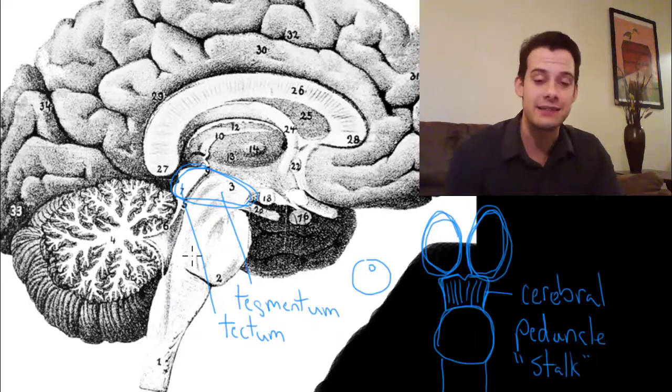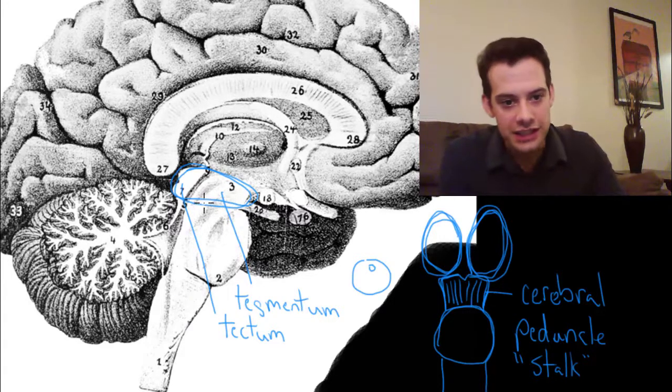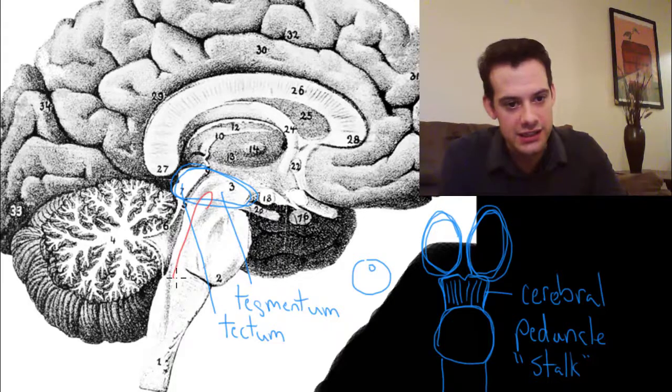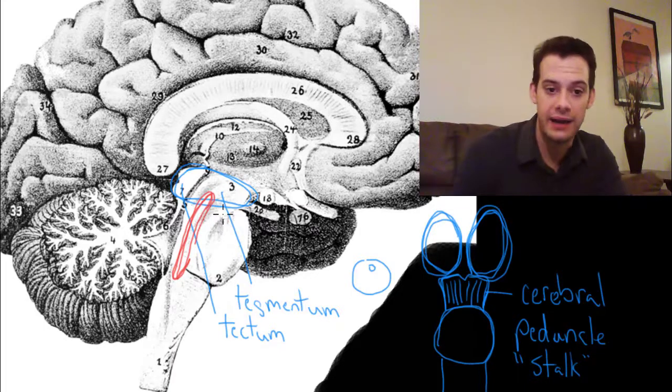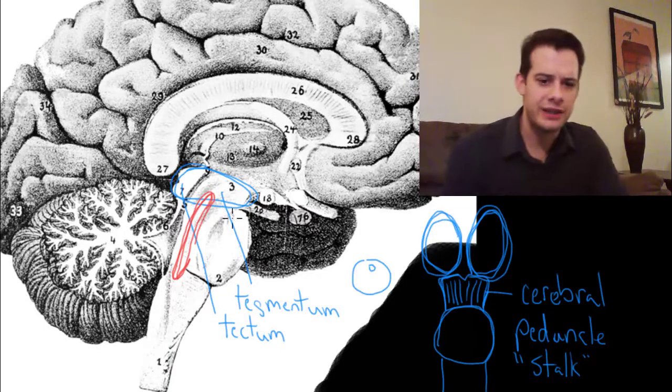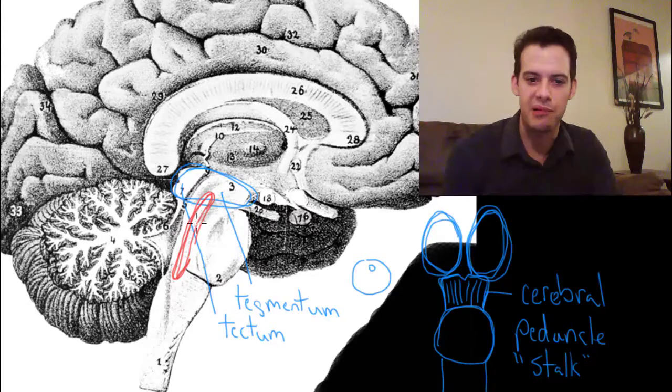Well, it turns out that the reticular formation isn't easily confined to either the hindbrain or the midbrain. Remember it's a system, it's a group of structures. So actually the reticular formation starts somewhere down here in the brain stem beneath the pons and it's continuing up here into what would technically be part of the midbrain.